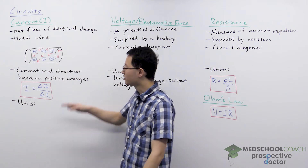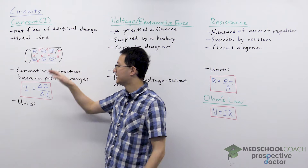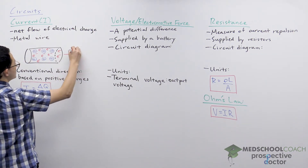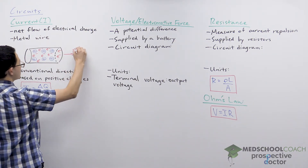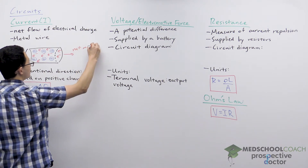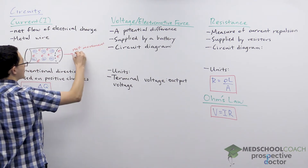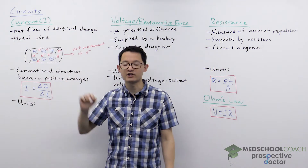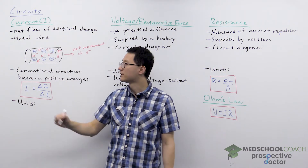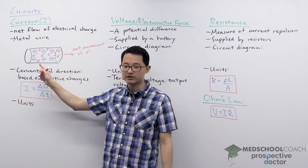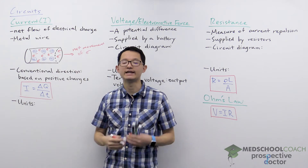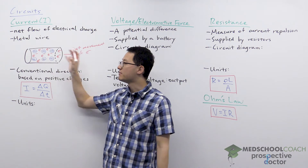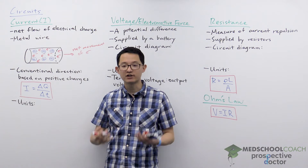So in order for there to be current, there has to be net movement of electrons. In this case, let's say we have net movement of electrons to the right, meaning electrons are moving in all directions but more electrons are moving to the right than any other direction. So now that there is net movement of electrons, we have current.